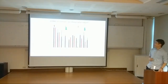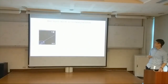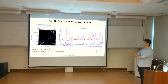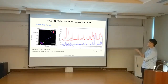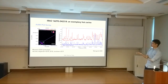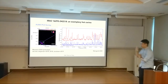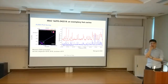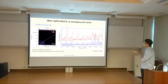IRAS 16293-2422 is a very typical archetypal hot corino source. A new paper resolves the two components of this system. The B source is where we found a lot of complex organic molecules, and the A source also shows complex molecules. This author was able to resolve the binary and derive some orbital constraints - which is pretty cool.